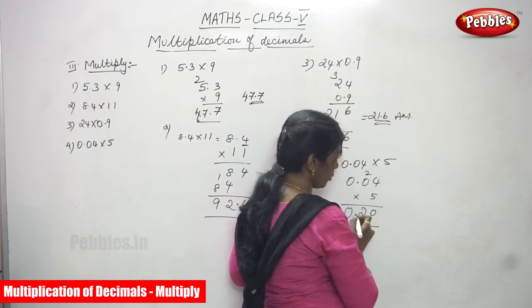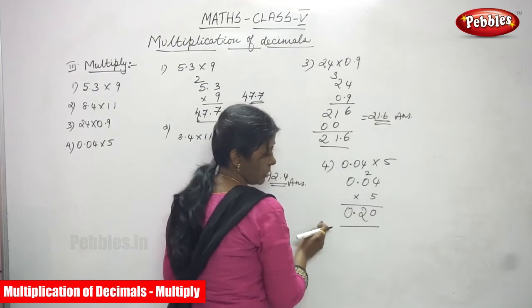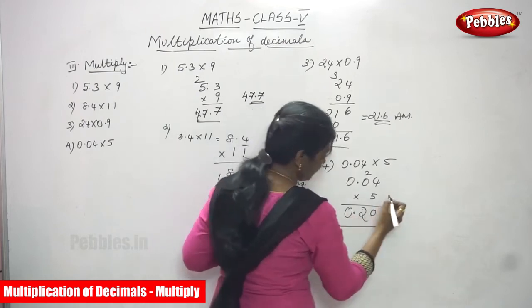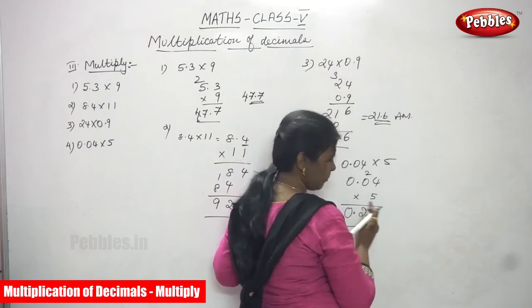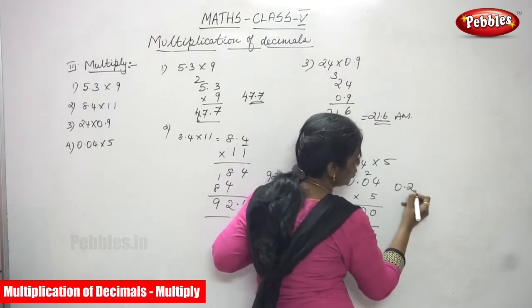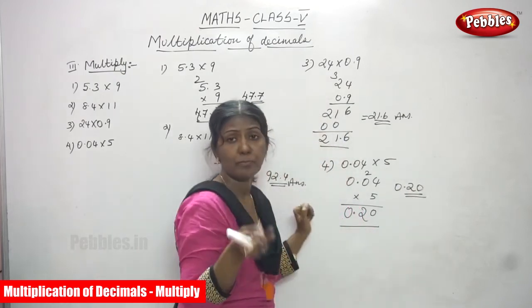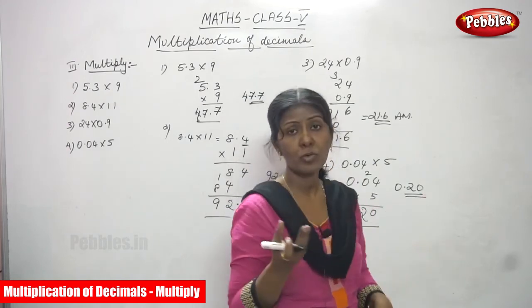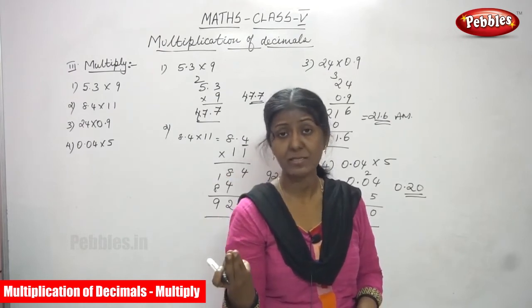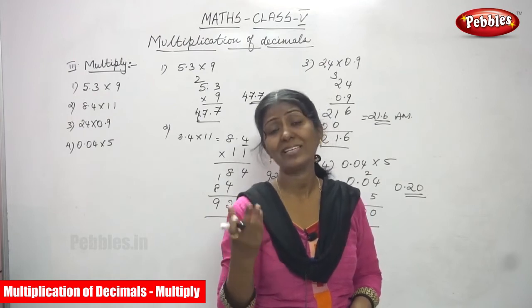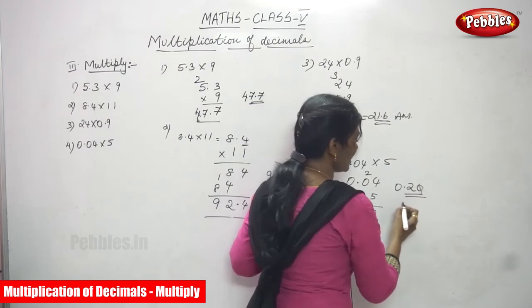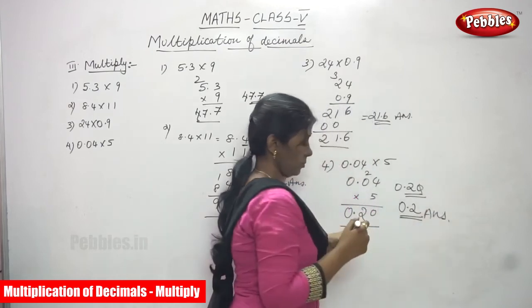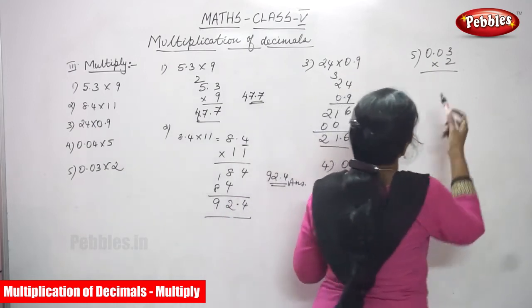From the right side you have to move the decimal point two places, because there are two digits after the decimal point in 0.04. So the result is 0.20. After the decimal point, a trailing zero has no value, so cancel the zero. The answer is 0.2.